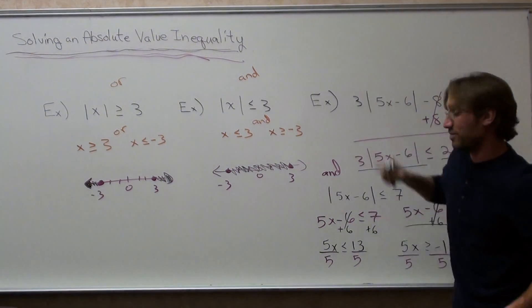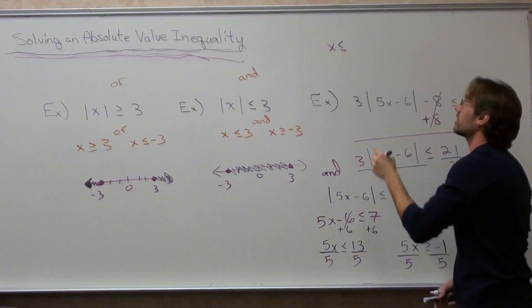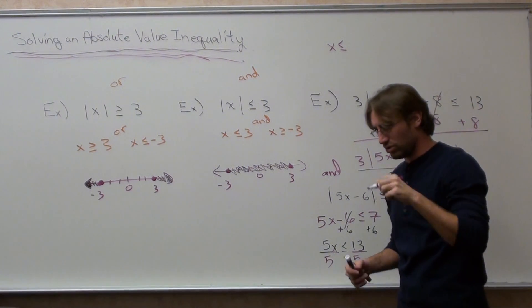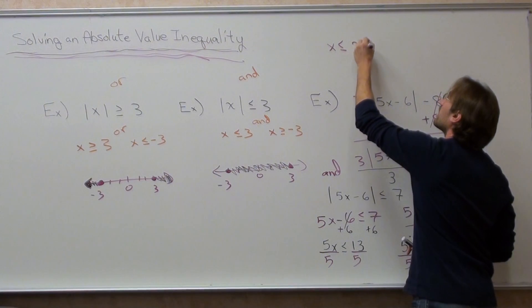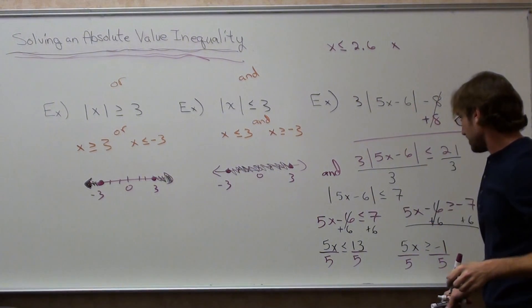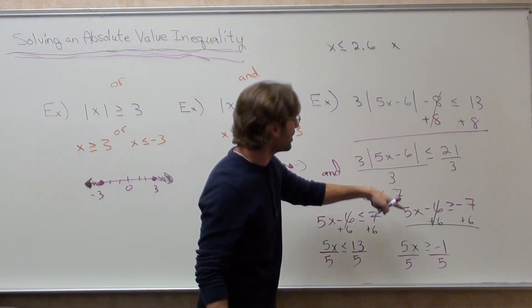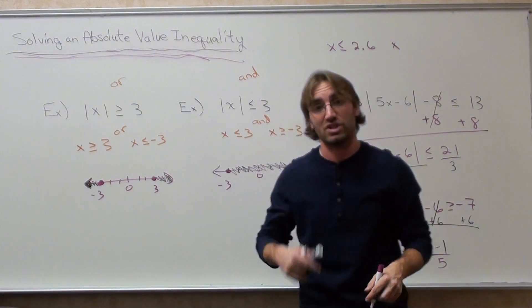I'm going to move the answer all the way up here. x is less than or equal to 13 fifths, which comes out to 2.6. And x is greater than or equal to negative 1 divided by 5, which is negative 0.2.